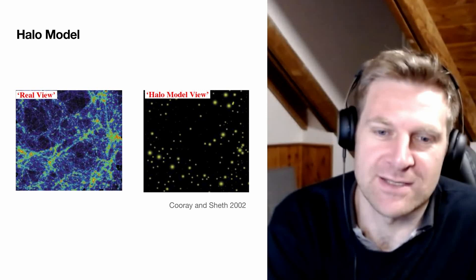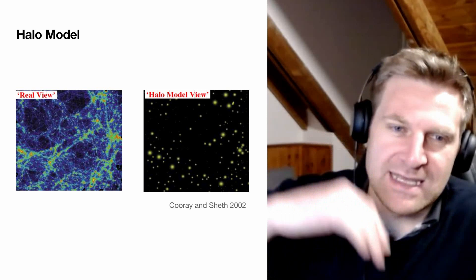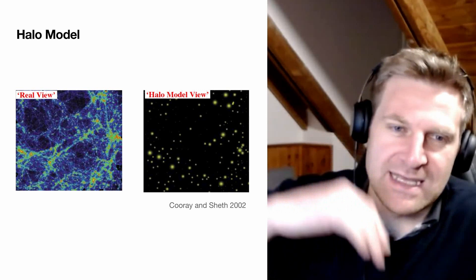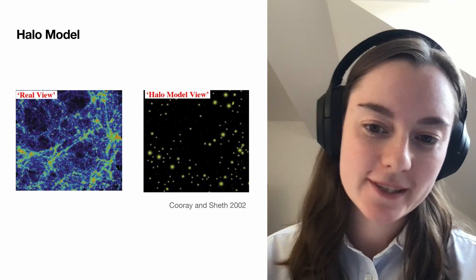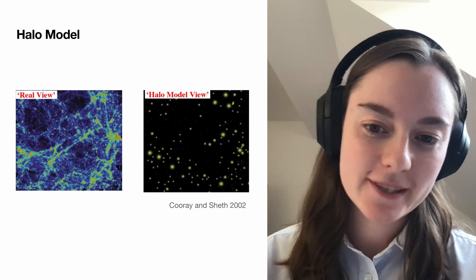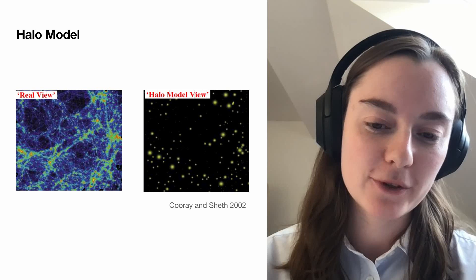Someone naively looking at this might wonder how the halo model view is successful because the real and halo-model pictures look nothing alike — though they are of the same initial conditions. If you put a minimum density cut on the left image, it would look a bit more like the halo model view on the right, which is kind of what our observations are doing. You can see the smaller halos starting to trace the filament.